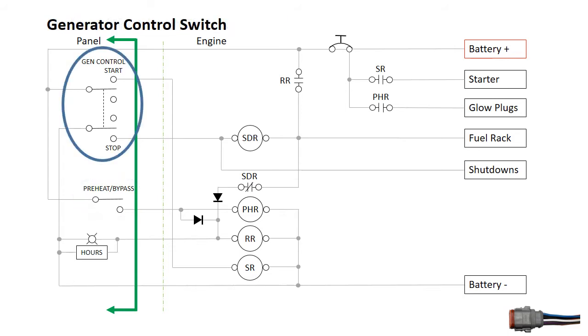The generator control switch provides start and stop control. Simple control panels include only an hour meter and run light while more advanced panels add pressure, temperature, and DC voltage gauges. The panel is connected to the generator by an extension harness.